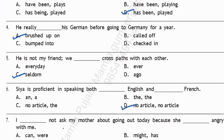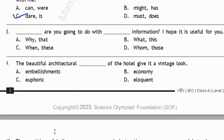Question seven: 'I dash not ask my mother about going out today because she dash angry with me.' When she is angry, it's 'I dare not ask my mother because she is angry.' The answer is option C. Question eight: 'Dash are you going to do with dash information? I hope it is useful for you.' It should be 'What are you going to do with this information?' — option B is correct.